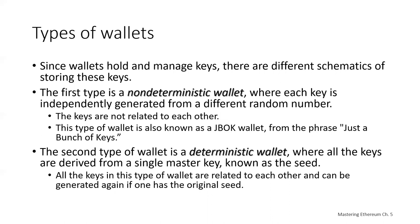There are several different types of wallets. The first type is a non-deterministic wallet, where each key is independently generated from a different random number and keys are not related to each other — also referred to as a JBOK wallet, or just a bunch of keys wallet. The second type is a deterministic wallet, where all keys are derived from a single master private key, sometimes called a seed, and all keys can be regenerated as long as you have the original seed. The most commonly used derivation method is a tree-like structure described in Bitcoin improvement proposals as the hierarchical deterministic wallet.